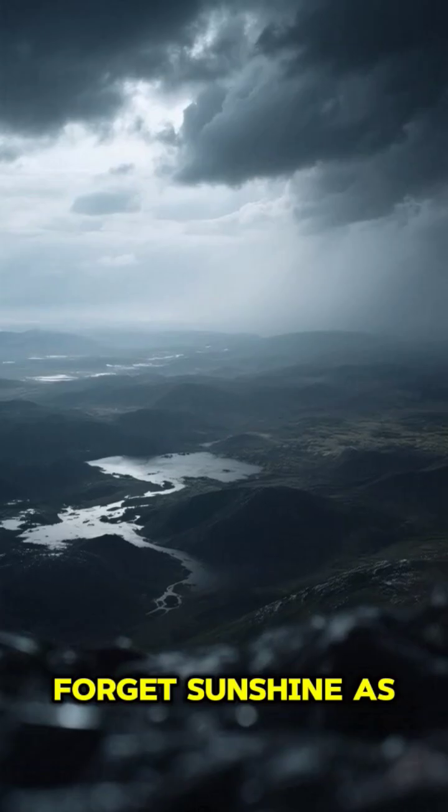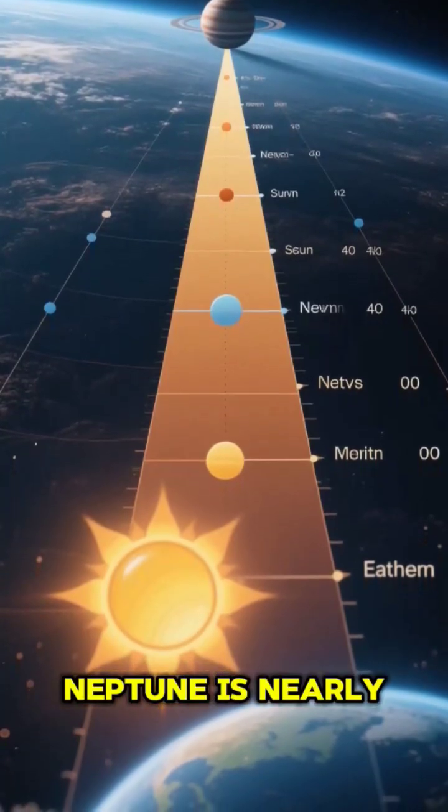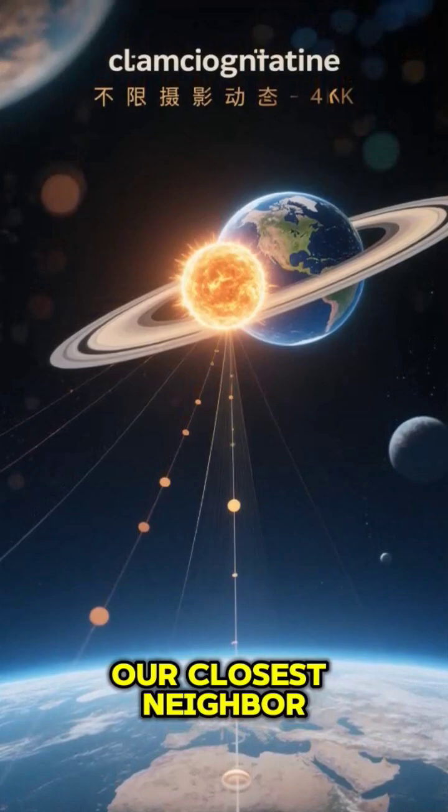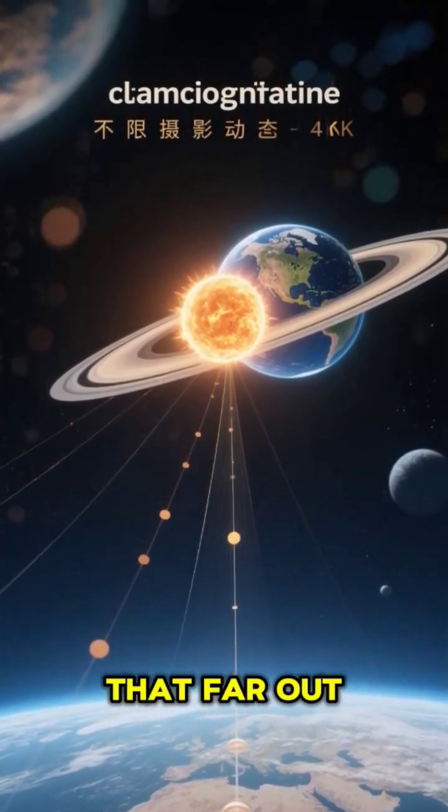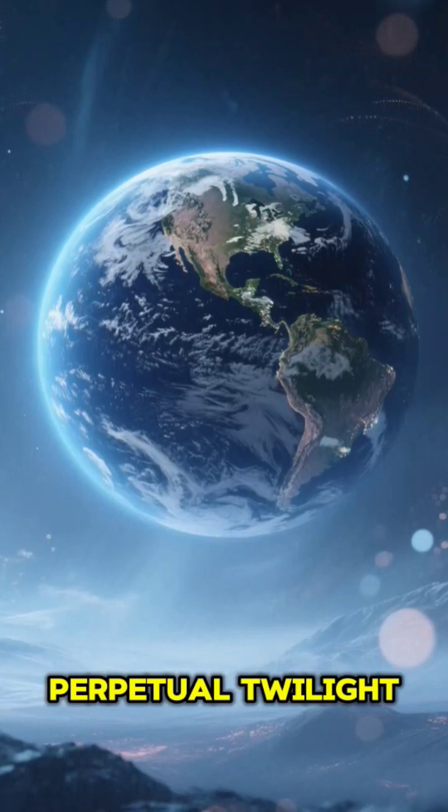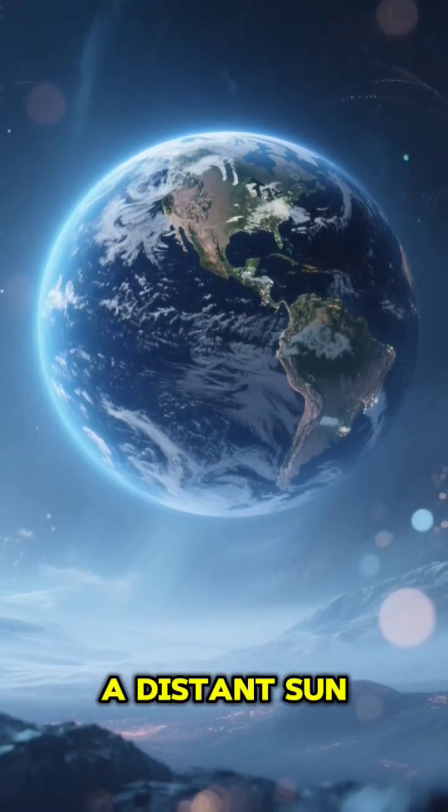First off, forget sunshine as you know it. Neptune is nearly 30 times further from the sun than Earth. If it were our closest neighbor, that means we'd also be that far out. Our planet would plunge into a deep, perpetual twilight, barely warmed by a distant sun.